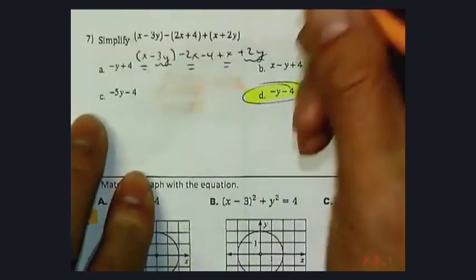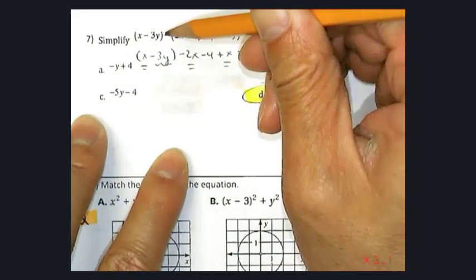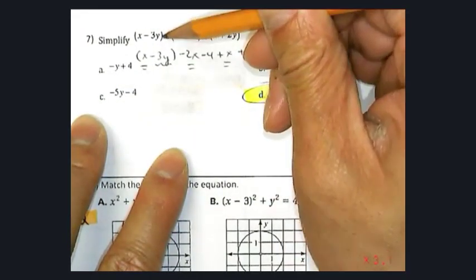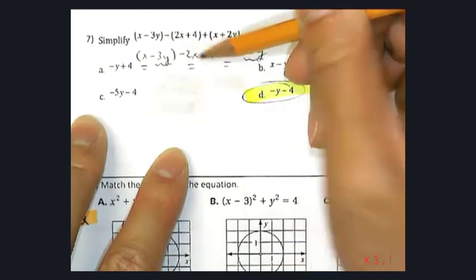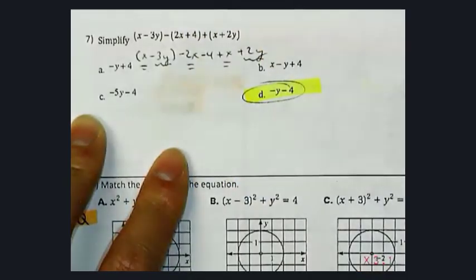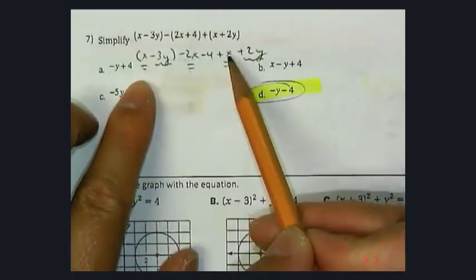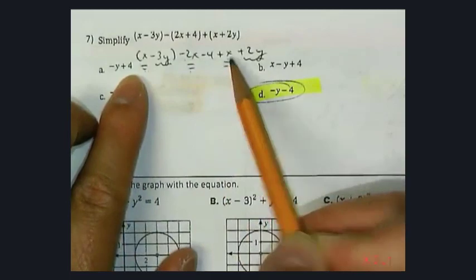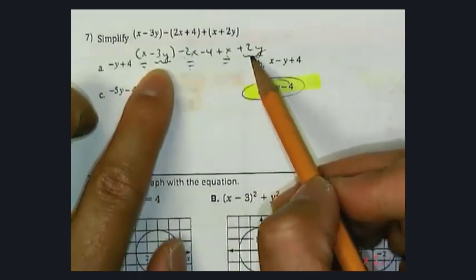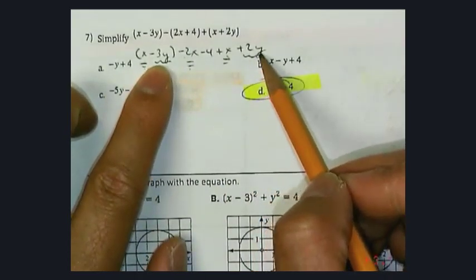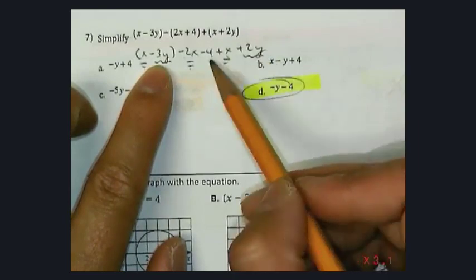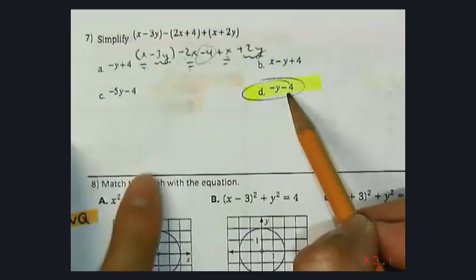It's asking you to simplify. So the first thing I'm going to do is deal with the minus sign, or distribute, so it becomes a negative 2x and a minus 4. Then I'm going to go through and combine like terms. I have a positive x, negative 2x, and a 1x. So 1, negative 2, and 1, that equals 0x, or the x's cancel. My y's here, I have a negative y, and that negative 4 is still left over, so my choice is D.